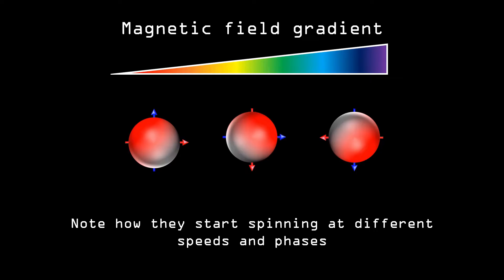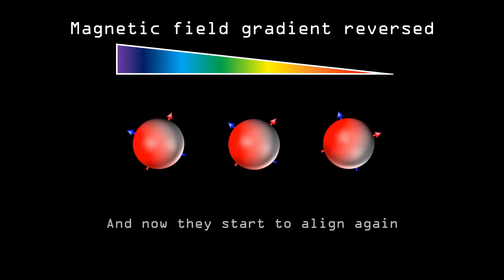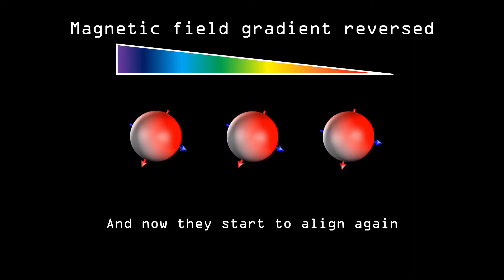If we afterwards apply another magnetic field gradient that is exactly opposite to the first and is applied for the exact same amount of time, the effect of the first gradient would just be nullified. In other words, at the end of the application of the second gradient, all protons would be spinning in the same phase again, just as they did in the beginning.